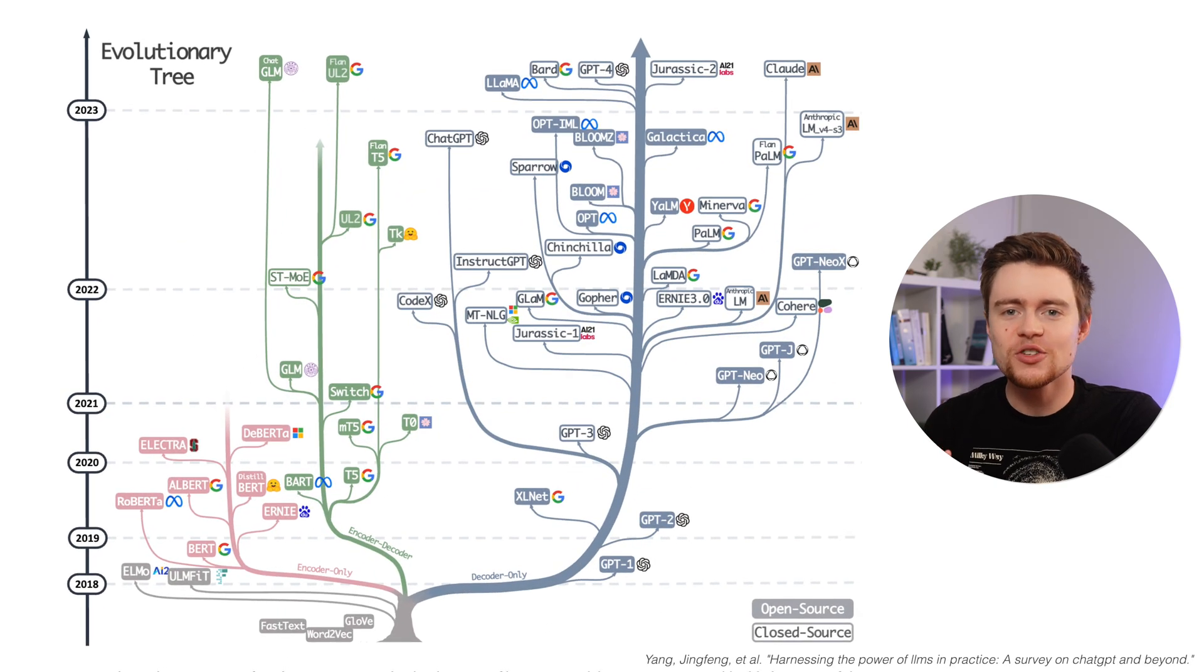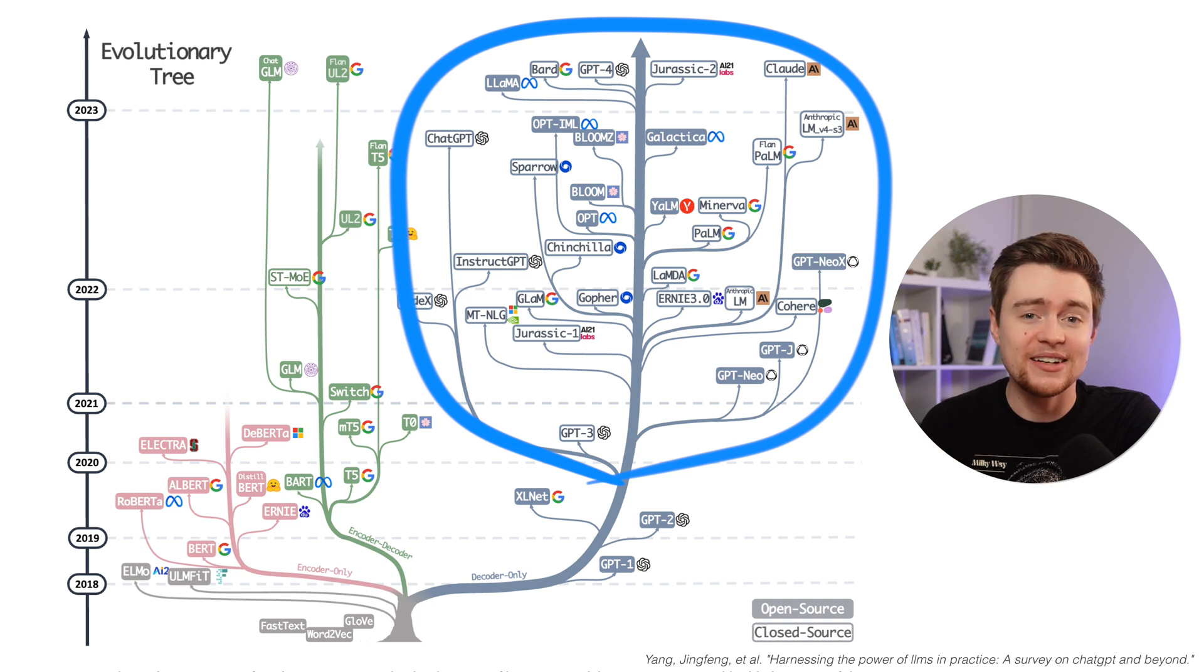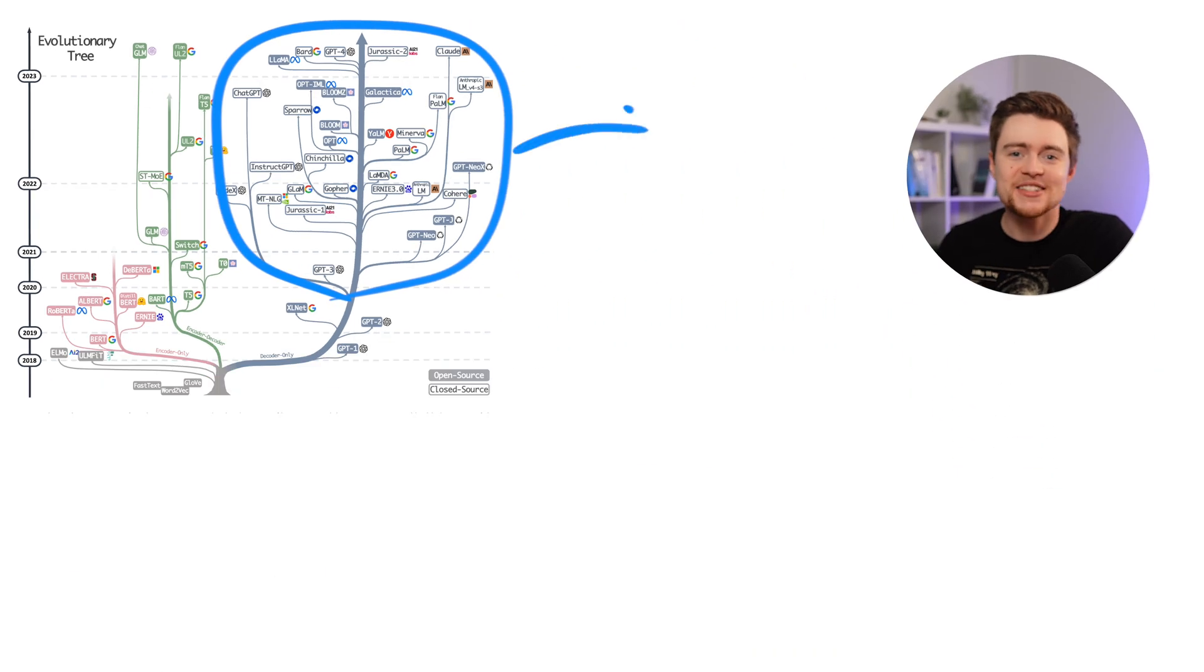This chart traces the evolution of language models in recent years. It separates all AI models into three categories: encoder-only models, encoder-decoders, and decoder-only models. You can see that decoder-only models have been dominating the development of LLMs over the past few years - all the AI focus is on decoders.